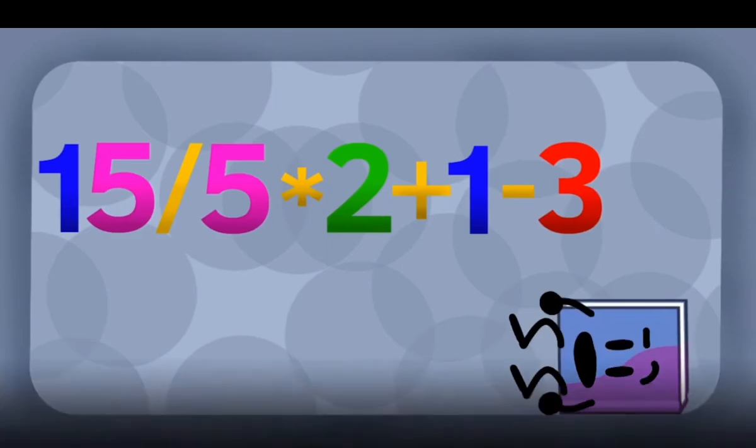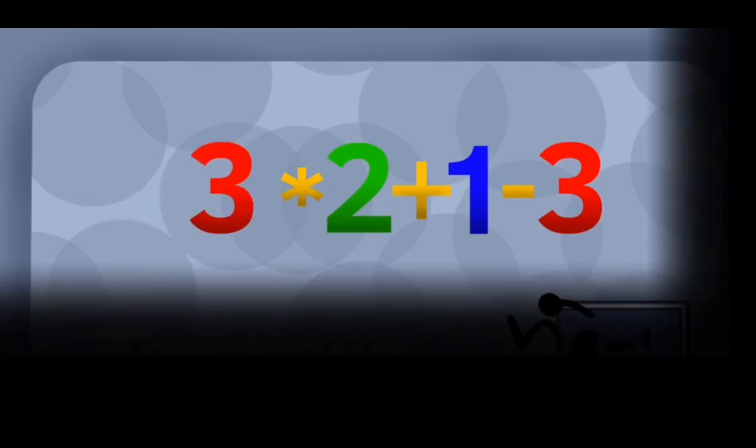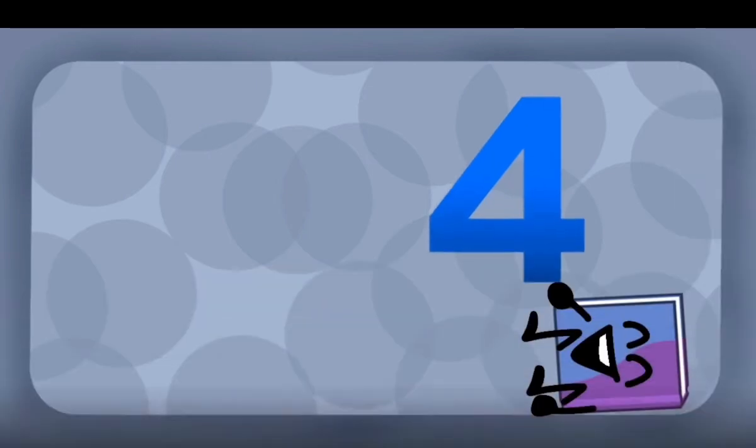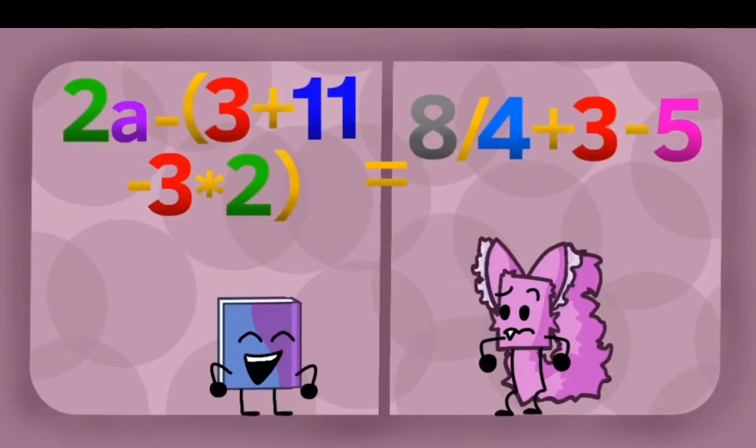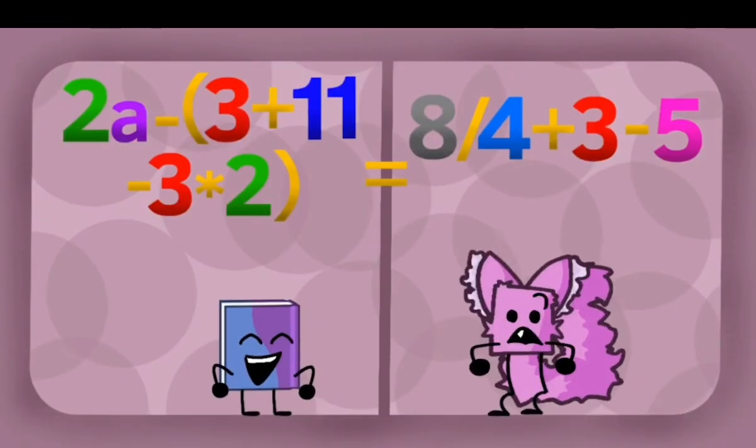Okay. Fifteen divided by five is three. Three times two is six. Six plus one is seven, and seven minus three equals four, so the answer is four. Yes, I finally landed on my feet. Quirky.